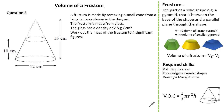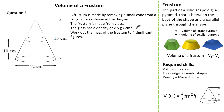Now let's have a look at a slightly harder question, referring back to our required skills. The question states we have a frustum made by removing a smaller cone from a larger cone shown in the diagram. The frustum is made of glass, and the glass has a density of 2.5 grams per centimetre cubed. We are asked to work out the mass of the frustum to four significant figures.